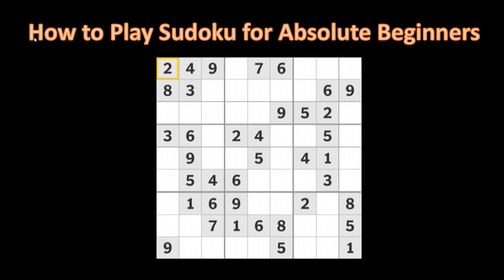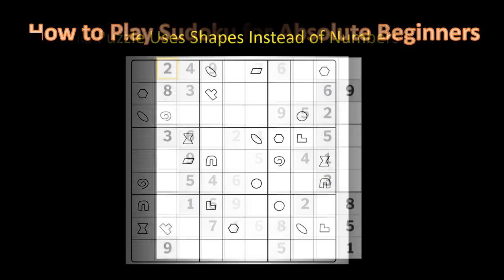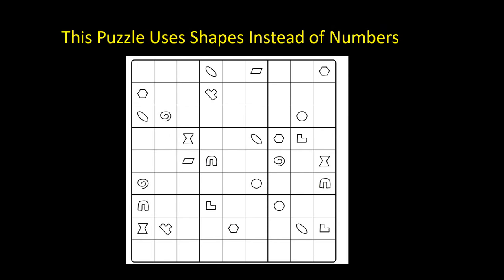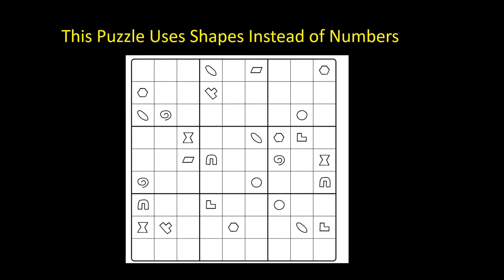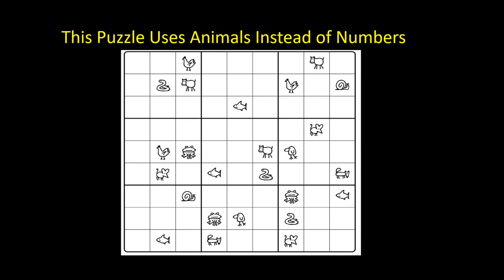Let's get one thing straight about Sudoku. It is not math. We use numbers to fill in the spaces, that's true, but those are just symbols. We could use any other set of nine symbols to solve a Sudoku puzzle. Here is one using shapes. There are nine different shapes that must be used to solve this puzzle. And here is another Sudoku puzzle using animals. You get the idea, right?